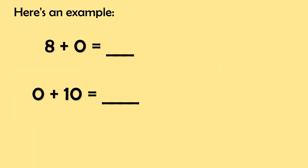Here is an example. Observe the following. Eight plus zero is equal to eight. Very good. And zero plus ten is equal to ten. Now, what do you notice? So, when we add zero to any number, the sum is equal to the number itself. And that is identity property of addition.